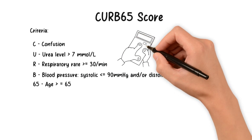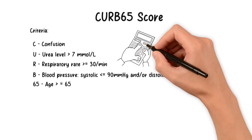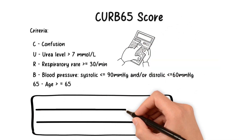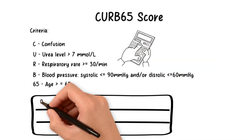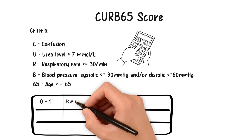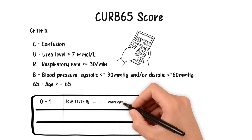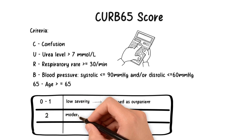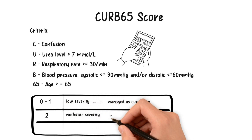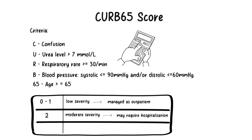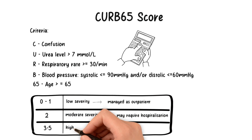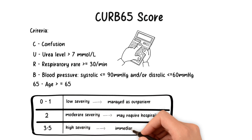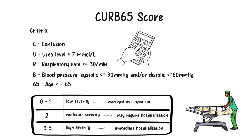The total CURB-65 score helps categorize the severity of pneumonia. A score of 0 to 1 indicates low severity, and patients may be managed as an outpatient. A score of 2 indicates moderate severity, and patients may require hospitalization. A score of 3 to 5 indicates high severity and usually necessitates immediate hospitalization.